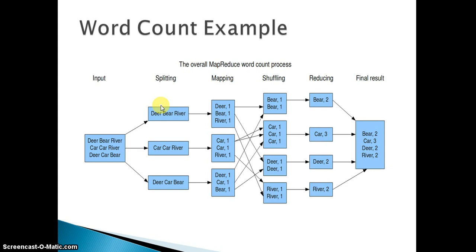Once we pass that as an input to the mapper, the mapper will convert this block into a string, and after converting it into a string it tokenizes them into words — tokenizing is nothing but breaking them into words. So we will have three words for our first input: one is deer, second is bear, and third is river. Once we get these three words, the mapper will append a single digit one to each word. So we have deer comma one, bear comma one, river comma one. This is our first mapper output.